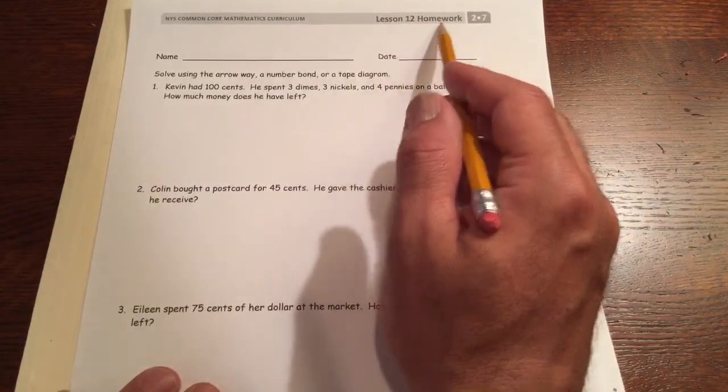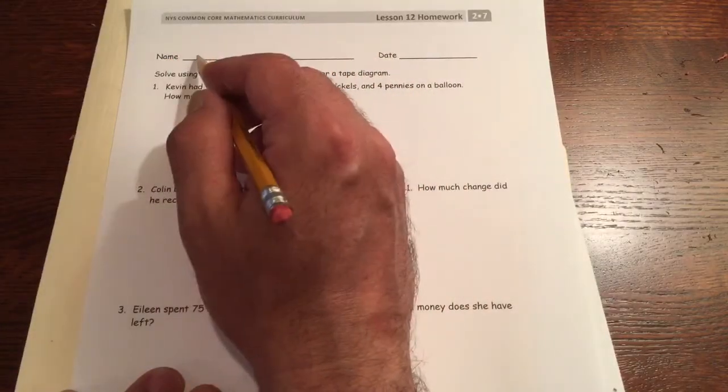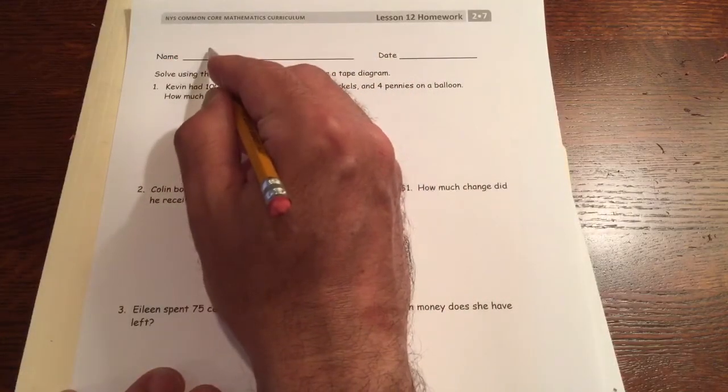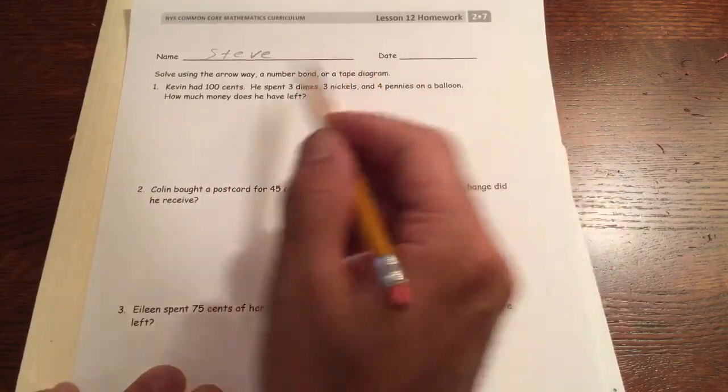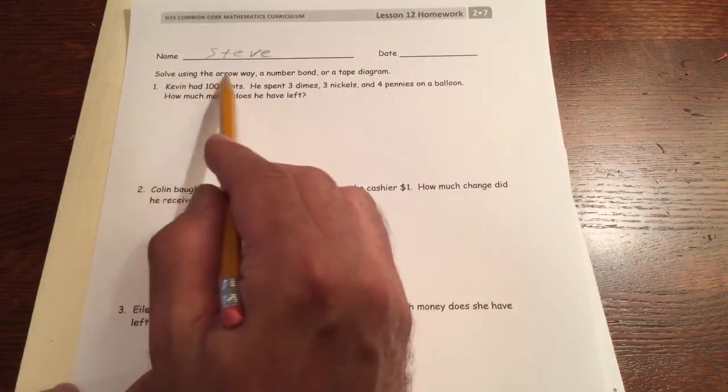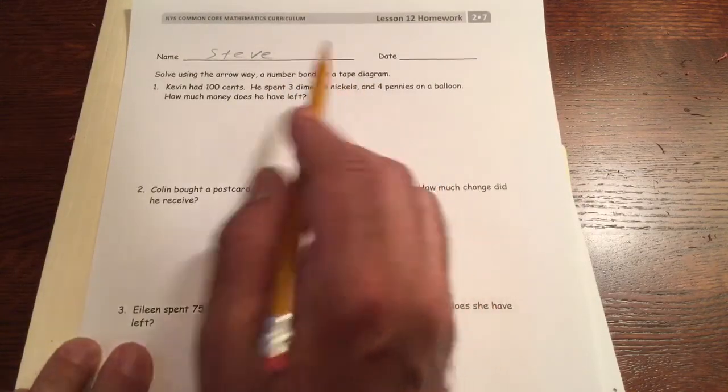This is lesson 12 homework, module 7, grade 2. Write your name. We're going to solve these using the arrow way, a number bond, or a tape diagram.